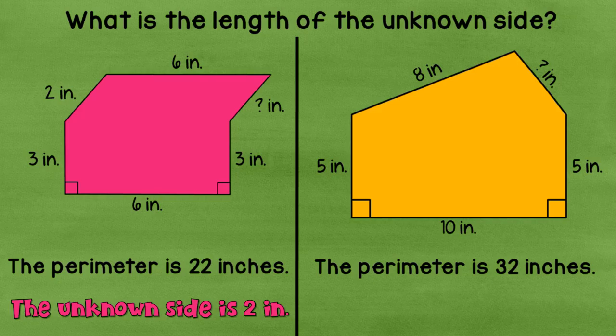Well, let's take a look at the orange polygon and the perimeter is thirty-two inches. I'm going to start with five plus five is ten. And ten plus ten is twenty. And twenty plus eight is twenty-eight. So twenty-eight plus what equals thirty-two? Well, if I counted up from twenty-eight to thirty-two, I would know that the answer is four inches.